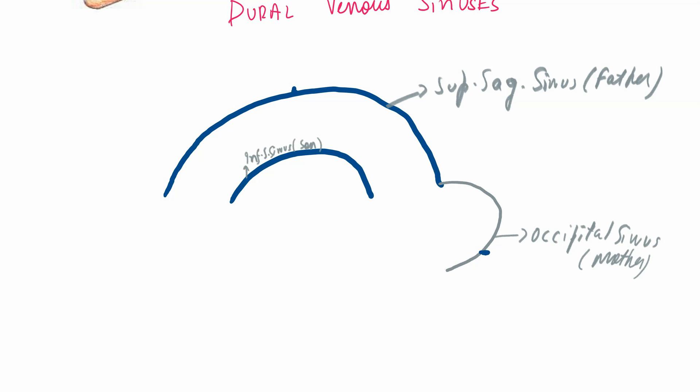Moving next, the inferior sagittal sinus gets married to the great vein of Galen. After getting married, it turns and becomes straight. Let's call this the straight sinus.